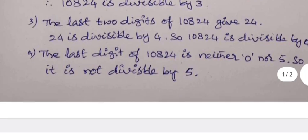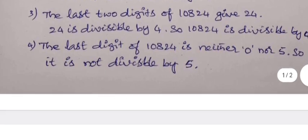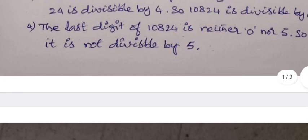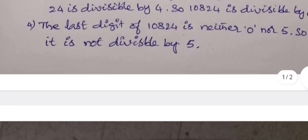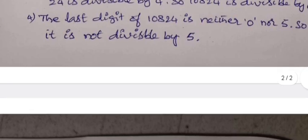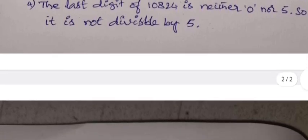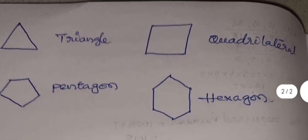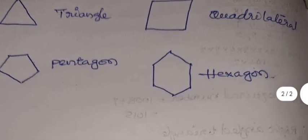As 24 is divisible by 4, so 10824 is also divisible by 4. The last digit of 10824 is neither 0 nor 5, so it is not divisible by 5. And in this there is an internal choice, if not A you can attempt B.